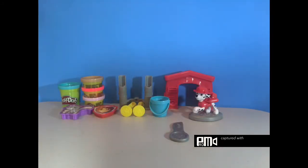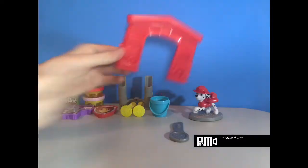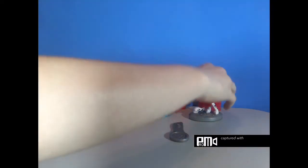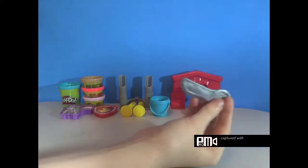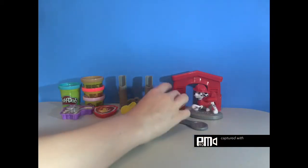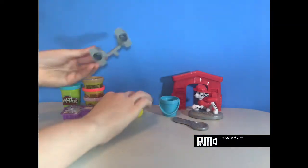Inside this set we have a firehouse which has molds on it, and then we have Marshall here with some molds on the bottom. We have a cutter that you can use to cut your Play-Doh, and a bucket with another mold on the bottom.